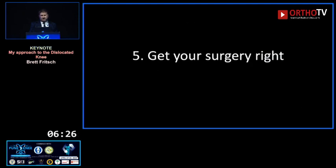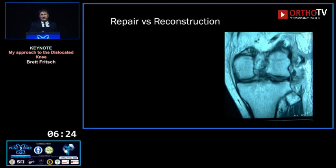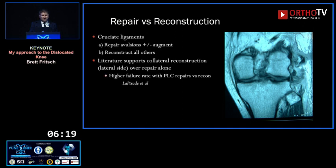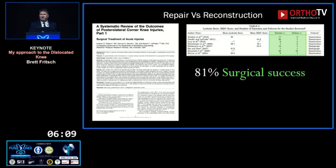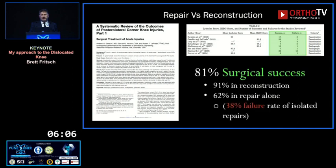The optimal time is around week two. You need enough time for capsular healing to allow arthroscopy without too much fluid extravasation, but not so late you can't easily dissect out repairable structures. Day 10 tends to be ideal. Now, to get your surgery right: mostly we're reconstructing the cruciates. A meta-analysis from Rob LaPrade's group showed with posterolateral corner injuries the success rate is about 81% overall — 91% with reconstruction and only 62% with isolated repair.